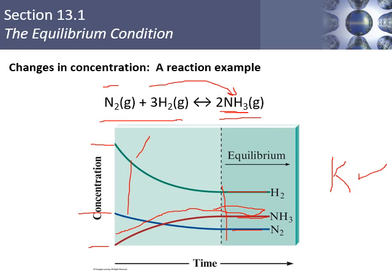What happens if you're not at equilibrium? You can't set the forward and reverse rates equal. Instead we use the reaction quotient Q — calculated the same way as K (products over reactants), but not necessarily at equilibrium. If Q equals K, you're at equilibrium. If Q is less than K, you need to let the reaction proceed further. If Q is greater than K, the system has to shift back. The difference between Q and K is that Q is not necessarily at equilibrium.